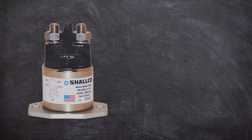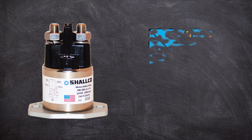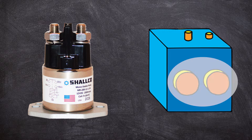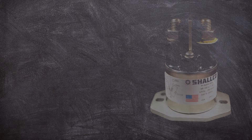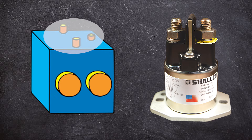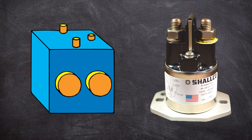This is a real mono-stable relay and this is a graphical representation we are going to use. These are the control terminals and these are the operating terminals. This is a real bi-stable relay and this is a graphical representation we are going to use. These are the control terminals — note that there are three — and these are the operating terminals.